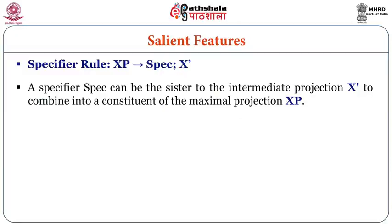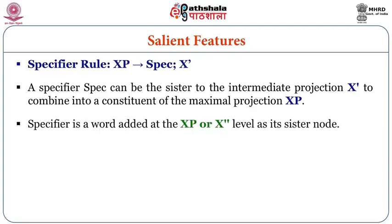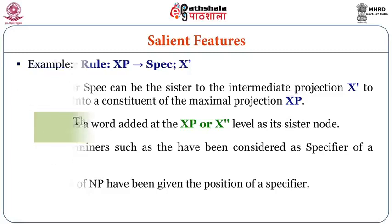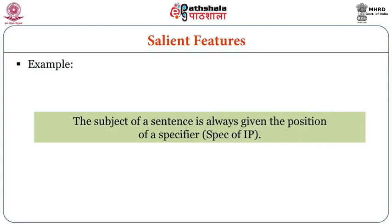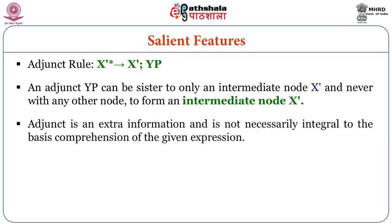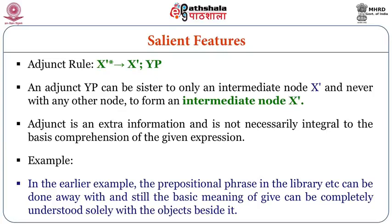A specifier can be the sister to the intermediate projection X-bar and combined forms a constituent of the maximal projection XP. A specifier is a word added at the XP level as its sister node. Determiners such as 'the' have been considered as a specifier of a phrase, and modifiers of noun phrases have been given the position of a specifier. For example, the subject of a sentence is always given the position of a specifier. An adjunct YP can be sister to only an intermediate node and never with any other node, to form an intermediate node X-bar. An adjunct is extra information that is not necessarily integral to the basic comprehension of the given expression — for example, the prepositional phrase 'in the library' can be done away with and still the basic meaning of 'give' can be completely understood solely with the objects beside it.